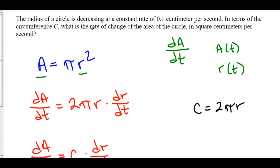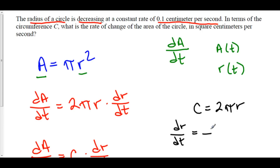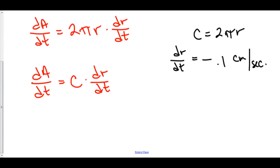So now we have dA/dt = C · dR/dt. They also gave us more information: the radius of our circle is decreasing at a constant rate of 0.1 cm per second. The radius is r, and decreasing means r is changing — what they've given us is dR/dt. Since r is decreasing, dR/dt is negative — it's negative 0.1 cm per second. So we plug this into our model: dA/dt = C × (−0.1).